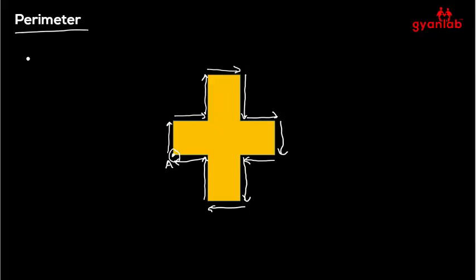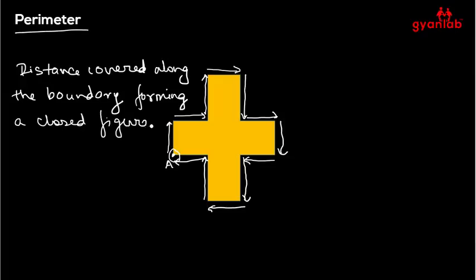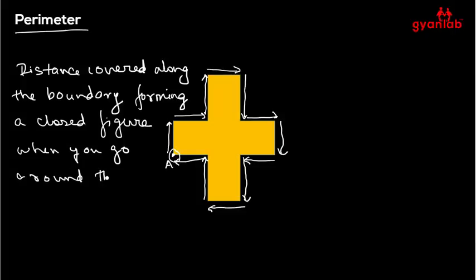So what is the definition of a perimeter? A perimeter is defined as the distance covered along the boundary, forming a closed figure, when you go around the figure once.